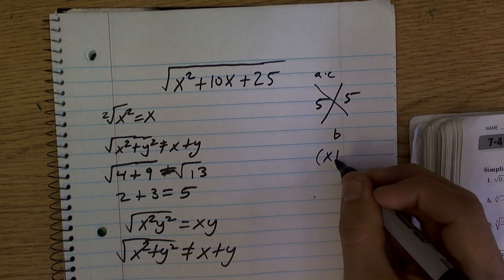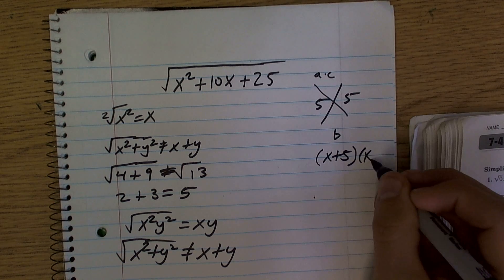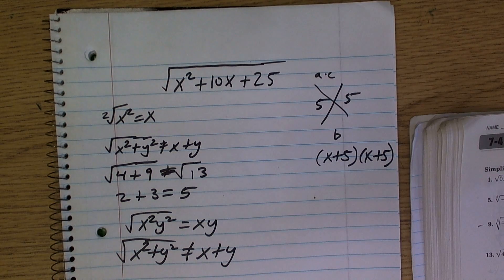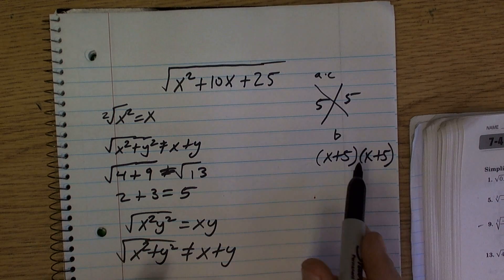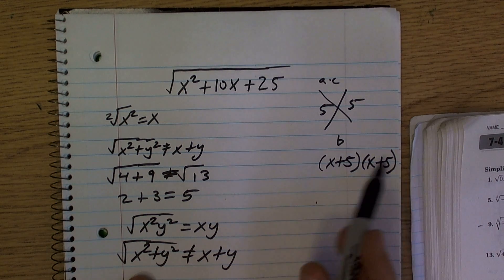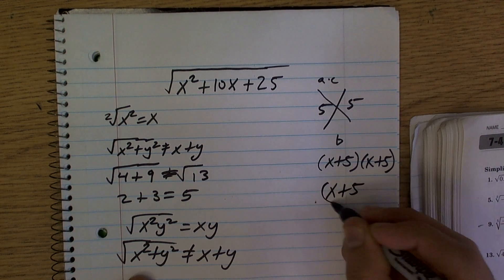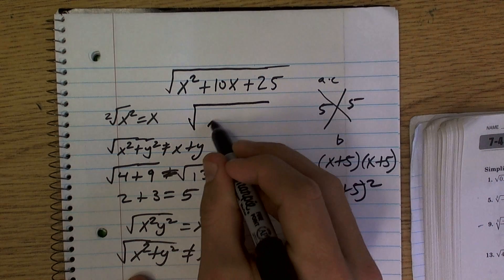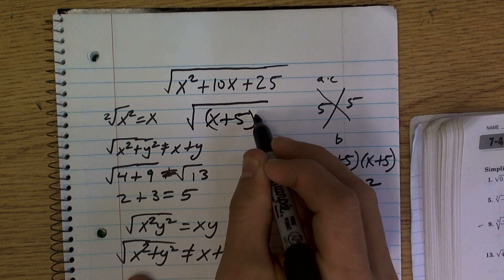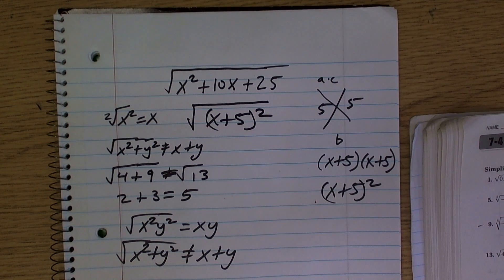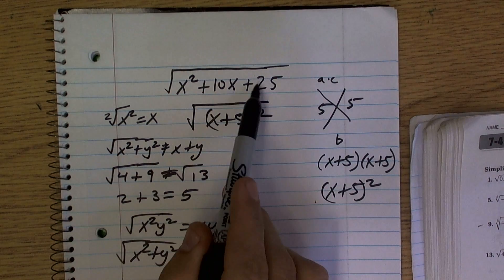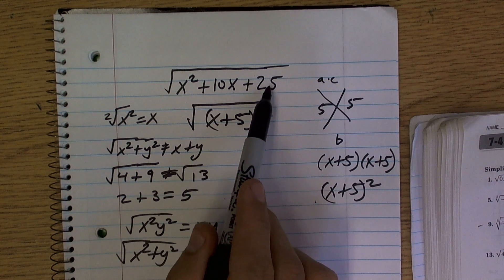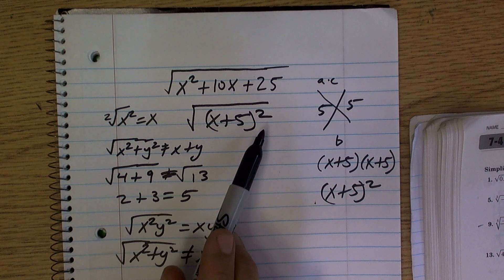Yeah. So what I could do is write x plus 5 times x plus 5. That is equivalent to x plus 5 squared. So without changing any math in the problem, I just rewrote my radicand under my radical as x plus 5 squared. Is that okay? Yep.